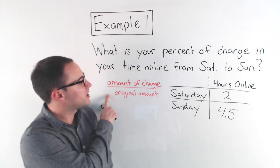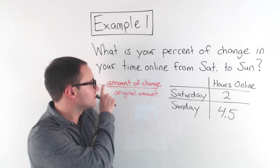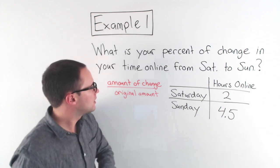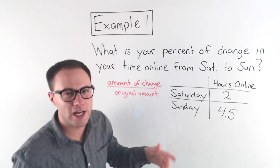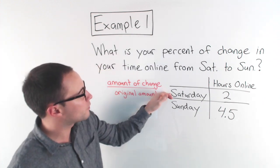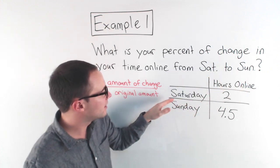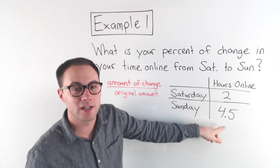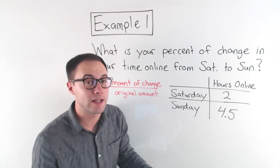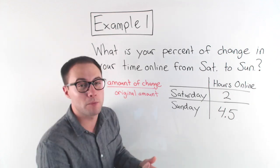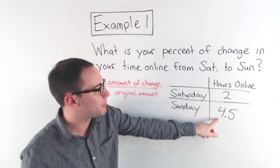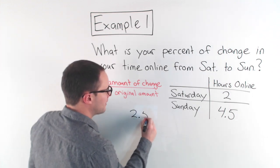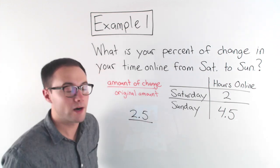Percent of change is just the amount of change over the original amount, then we make that into a percent. We're going from Saturday to Sunday — Saturday was two hours, Sunday was four and a half. It increased, so we know this is going to be a percent increase. It increased by two and a half hours, so 2.5 goes in the numerator.